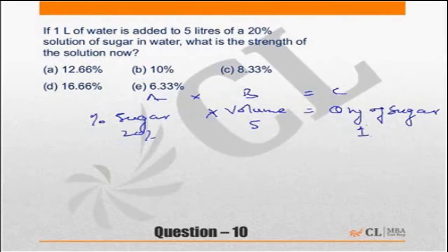Now look at this. I'm adding 1 liter of water to 5 liters. The volume of the mixture goes from 5 to 6, so it becomes 6 by 5 times.